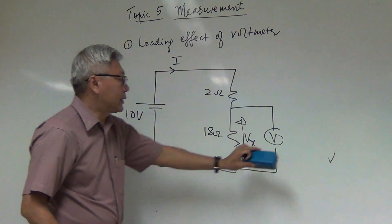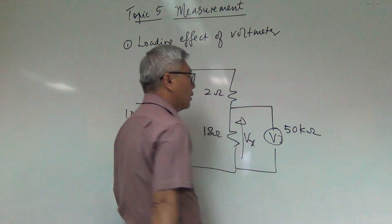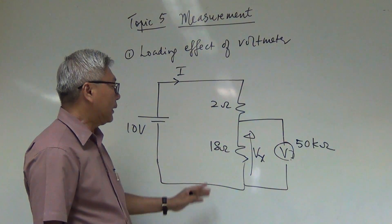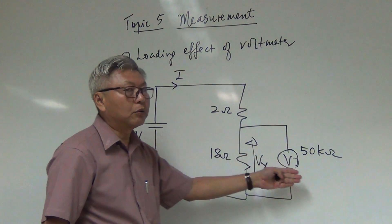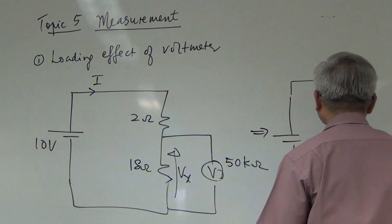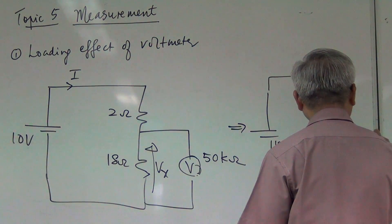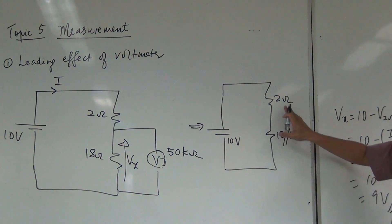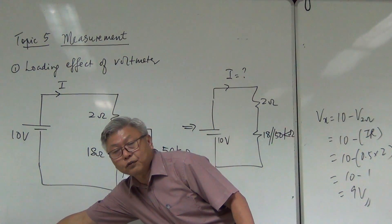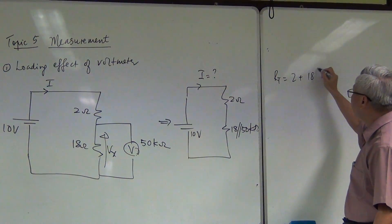So let's find out how to do the mathematics. If this voltmeter has an internal resistance of 50 kilohms, then to find Vx the circuit is no longer a simple series circuit — it is now 2 ohms in series with 18 ohms parallel with 50 kilohms. The circuit changes, so my current would change as well. To find the new current, we need the new total resistance, which equals 2 plus (18 parallel with 50 kilohms).